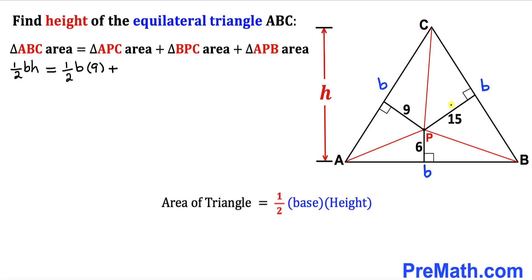Now let's focus on the other triangle BPC. Its base is b and its height is 15. Therefore the area of this triangle BPC is going to be a half times base b times height 15. Plus the triangle APB whose base is b and height is 6.